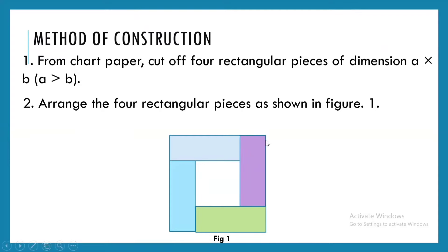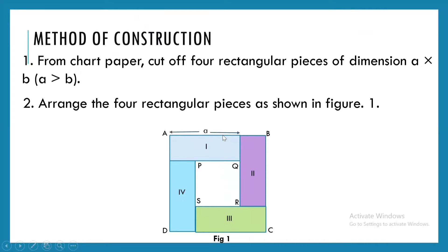Now you can see it is forming a square. Let us do the labeling. I label this as the first, second, third, and fourth rectangle. The outside vertices I mark A, B, C, and D. The inside vertices I mark P, Q, R, and S. Now, taking the length of each rectangle as A and the breadth as B, I mark all the A dimensions on the figure.